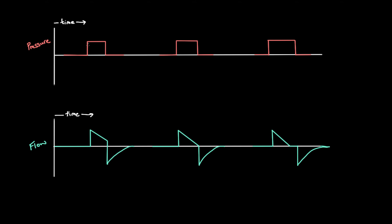I haven't used any units because they're not really relevant to understanding the concept. You can see how this would be a breath — the inspiration, a pressure-controlled breath. We elevate the pressure to a certain point and hold it there for a certain amount of time. We set the inspiratory time on the ventilator. From here to here is our pressure control level.